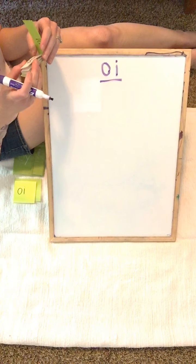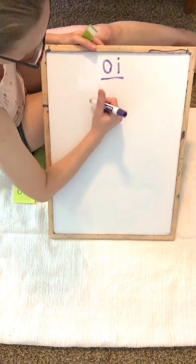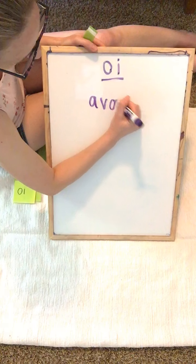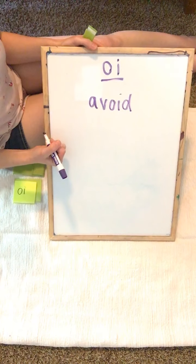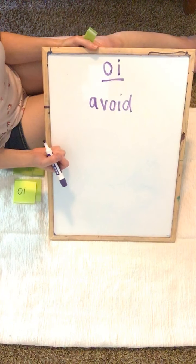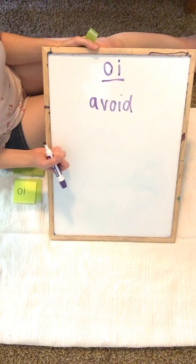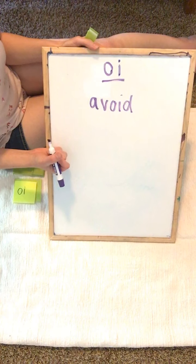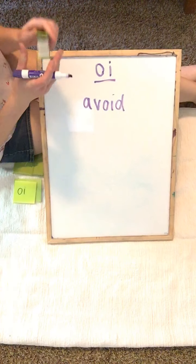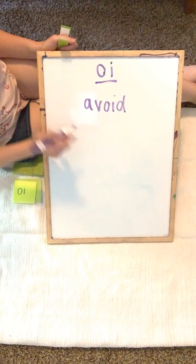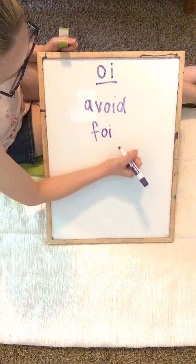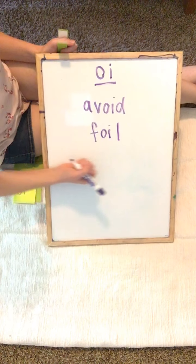Let's spell avoid. We hear A-V-O-I-D, avoid. Sometimes with our accents we say avoid or avoid, either way we say it this is how we spell it. Our next word is foil. At the beginning we hear F, in the middle we hear OI, at the end we hear L. Foil.